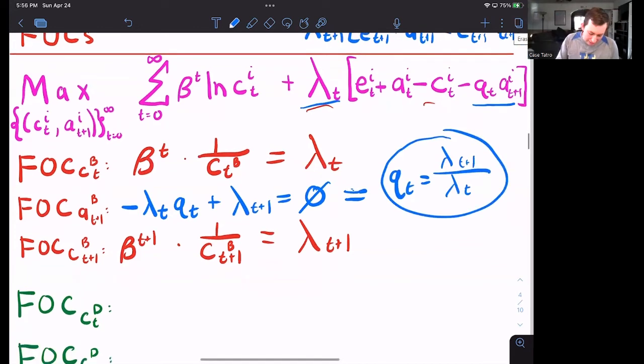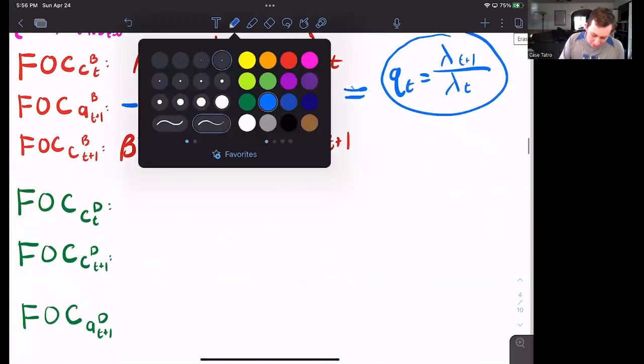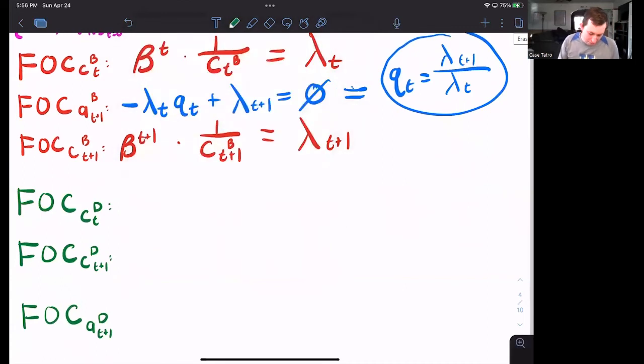Which is going to be useful in a second. But let's go for Dave's first order conditions as well, so we don't leave him out. It's going to be very similar to Bill's. So here's beta T one over CTD. That's going to be equal to lambda T.